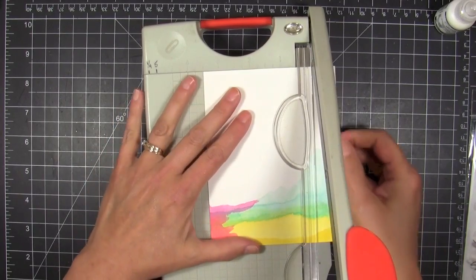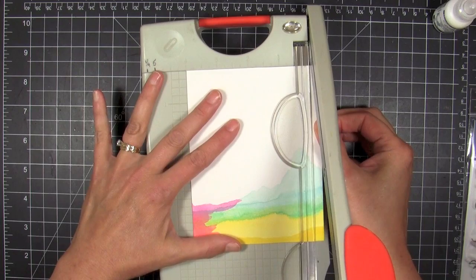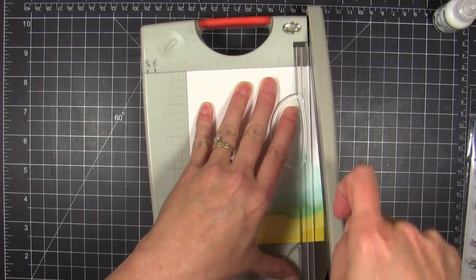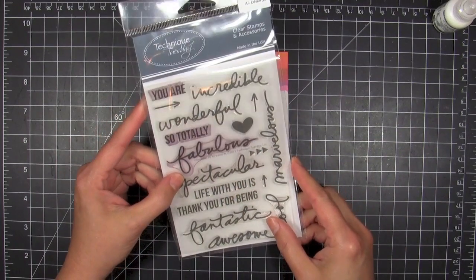Now that it's dry I'm going to trim it down. I decided I wanted a top folding card that is a single layer card, but it's easier for me to play on a single panel and then mount it to a base card.